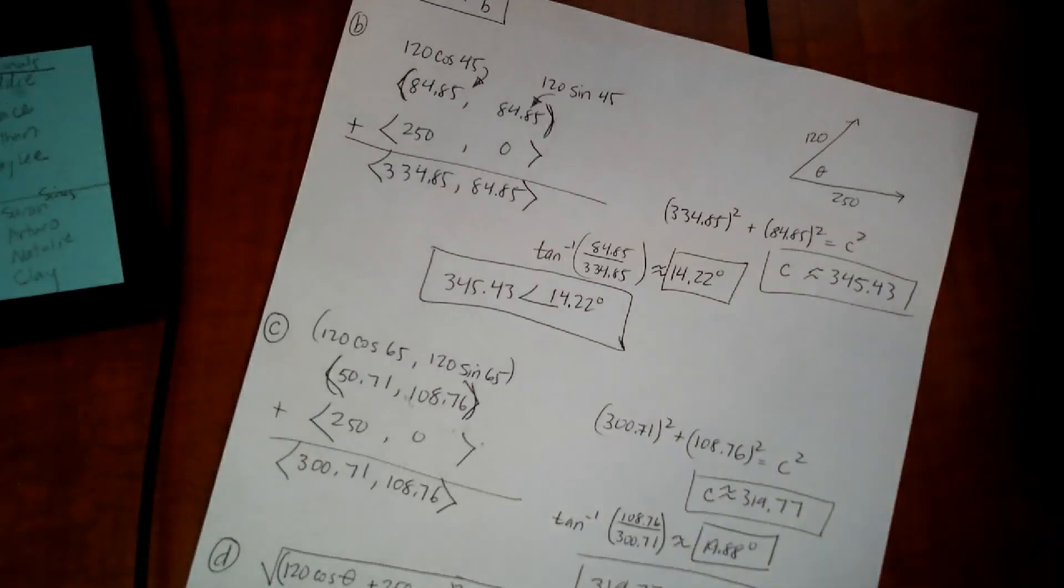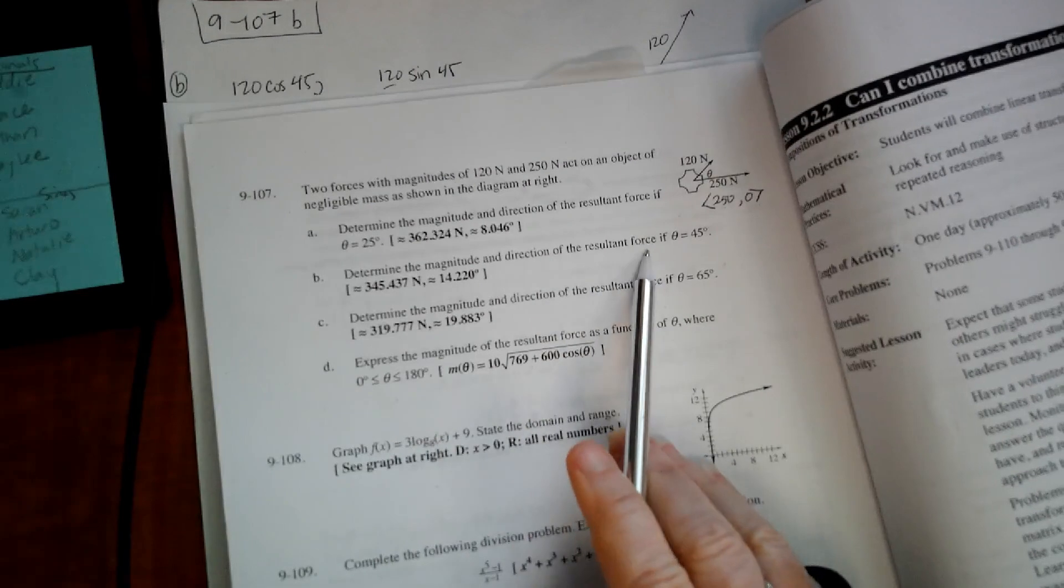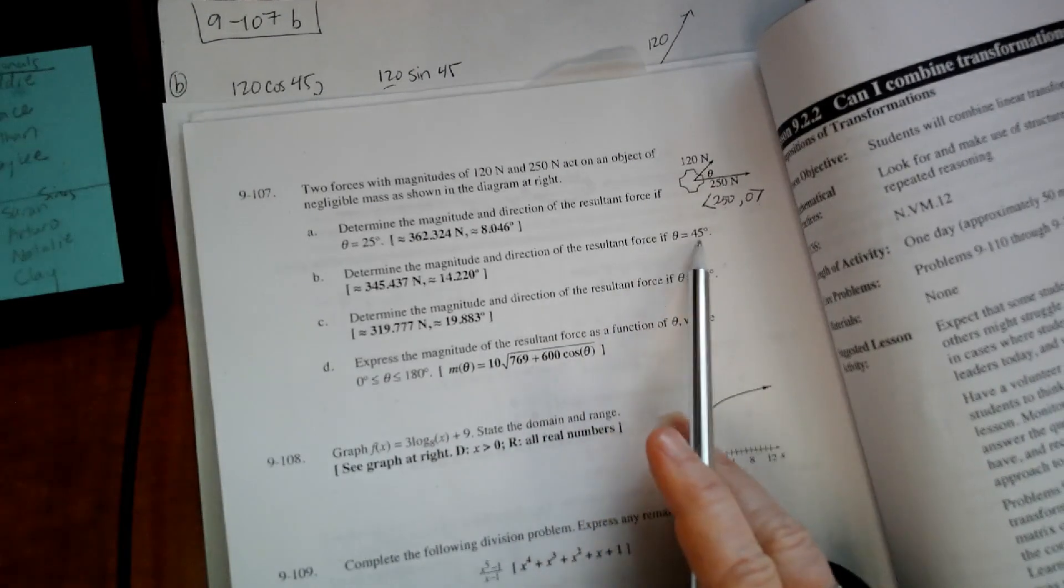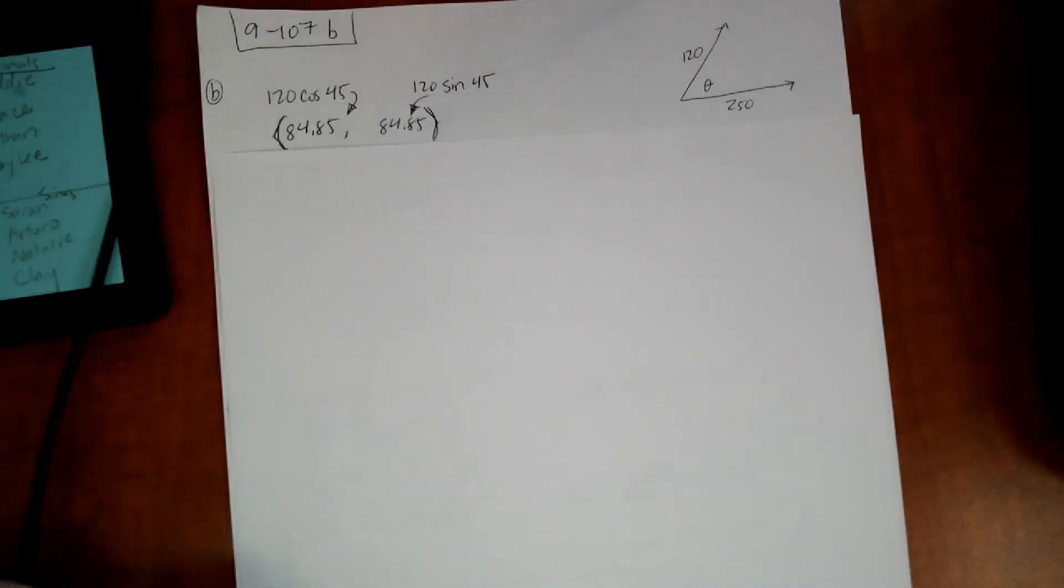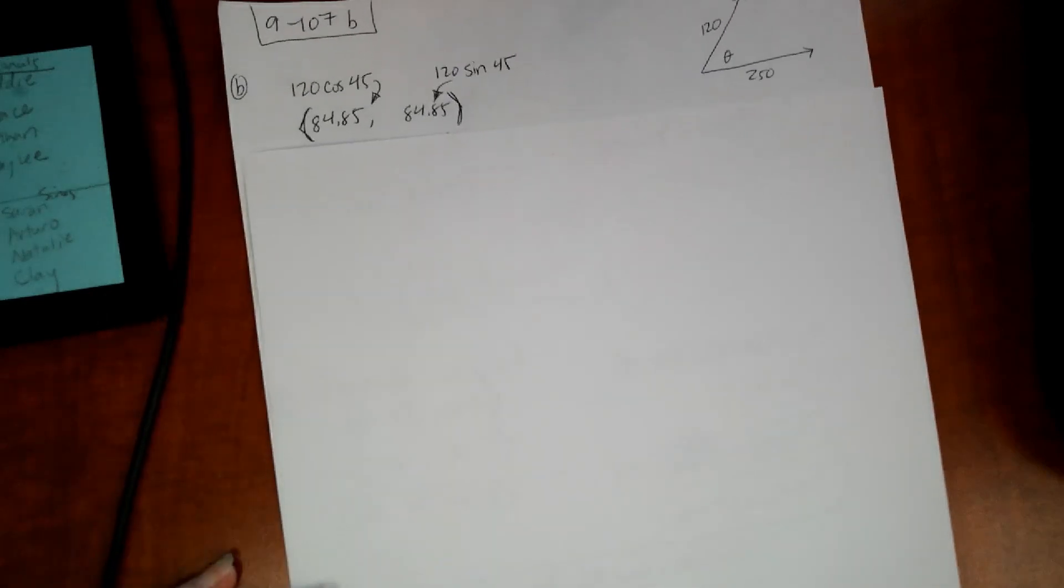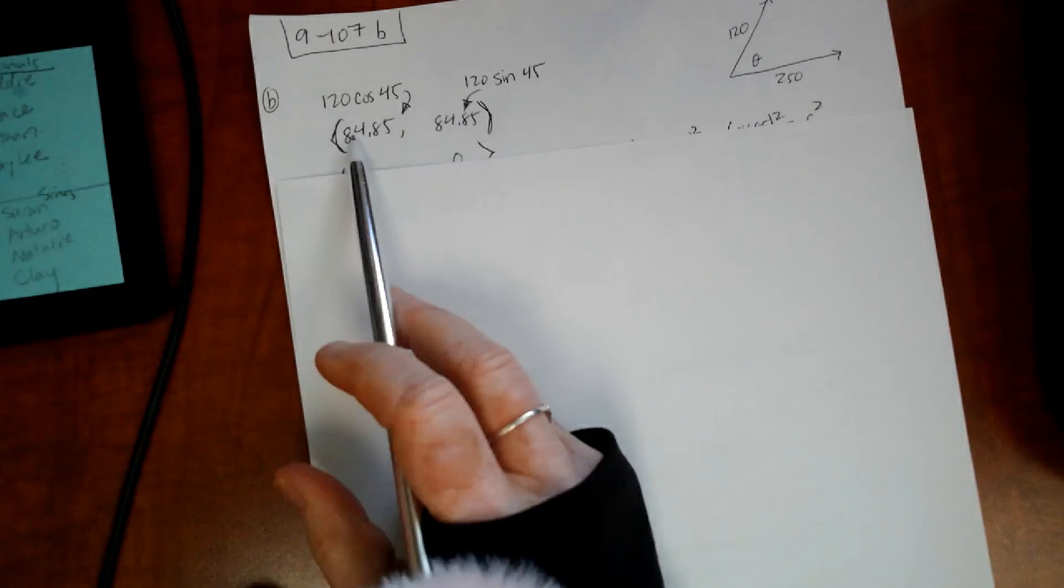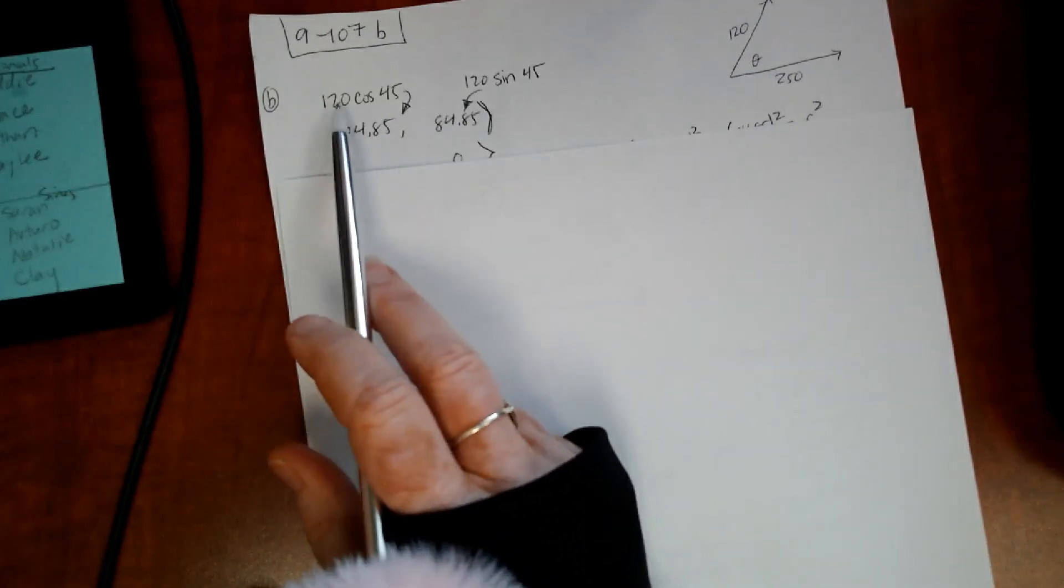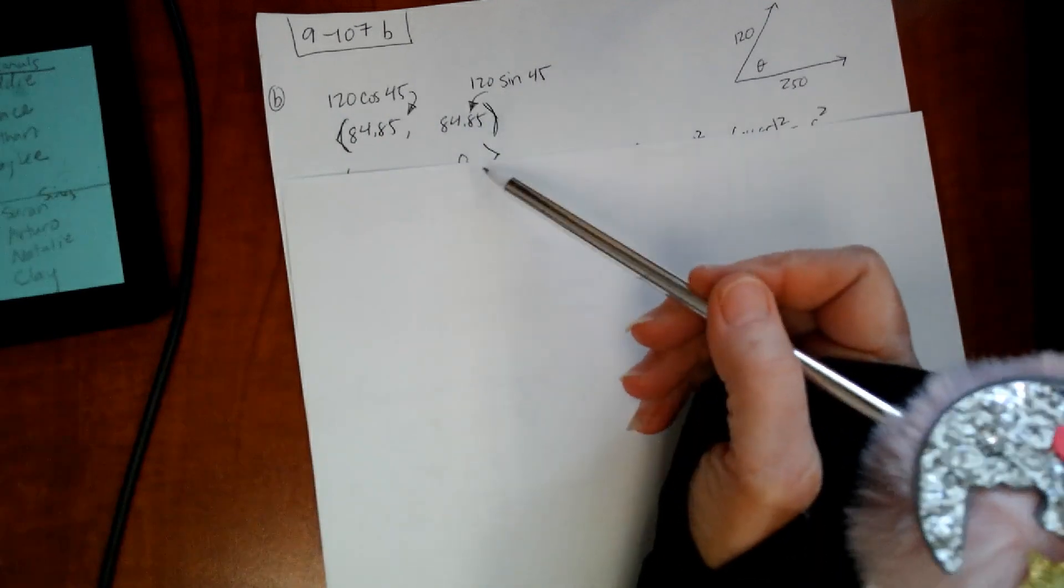Now for letter B, it's kind of more of the same. Letter B asked us to get the magnitude and direction of the resultant force, that means you have to add them up, if theta is 45. I'm going to just go through that whole same routine. But now I'm just going to use 45 degrees instead of 25.